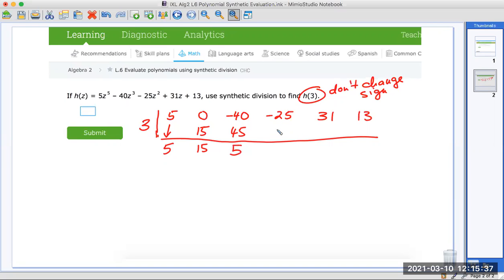Multiply. 15 take away 25 is negative 10. Multiply. 31 minus 30 is 1. Multiply.